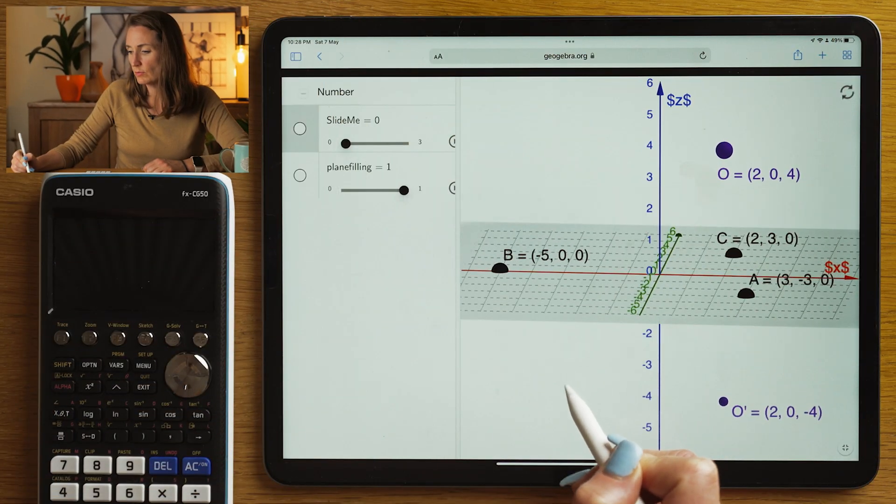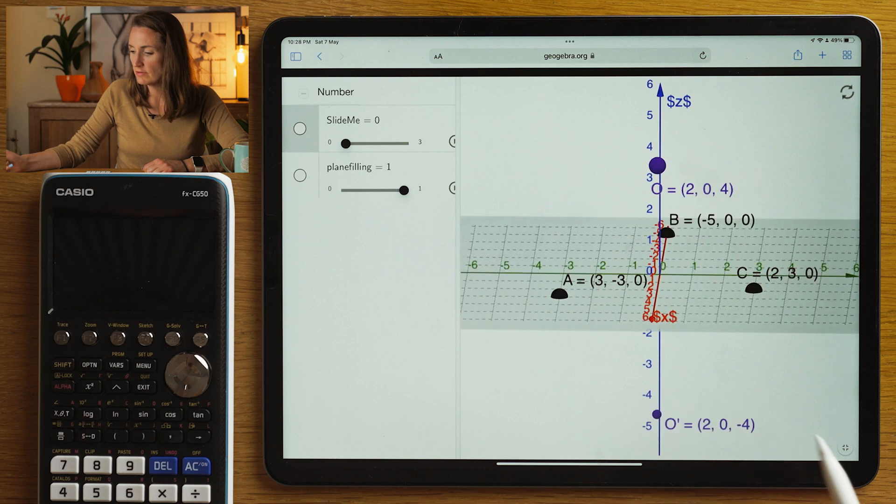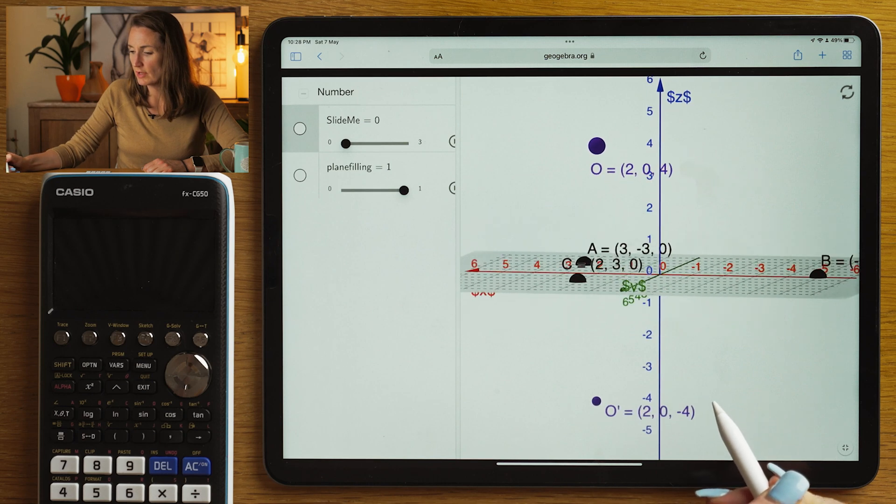Welcome back. We're looking today at how to reflect a point in a plane. This has definitely caused a lot of problems when I've set this in exams and starters. So I want to make this super clear for you guys today. I'm going to have a look at a 3D representation of the situation because definitely I notice it's a tricky one for people to visualize.